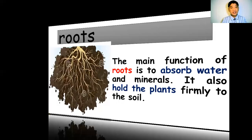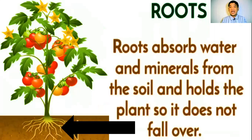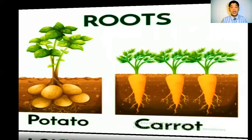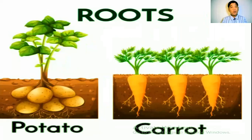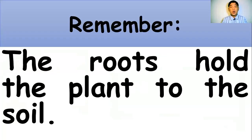In this picture we can see the roots. Roots absorb water and minerals from the soil and hold the plant so it does not fall over. We also have different types of roots we can eat, such as potato and carrot. Always remember that roots hold the plant to the soil.